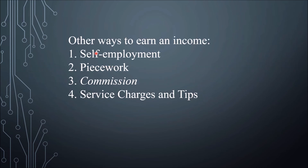There are other ways to earn an income aside from salary, wage, and allowances. Number one is self-employment, wherein a person works for themselves rather than for an employer. Number two is piece work, wherein an employee is paid for each piece of quality item he or she completes. The wages are paid on a piece-rate basis, which is usually used in factories.